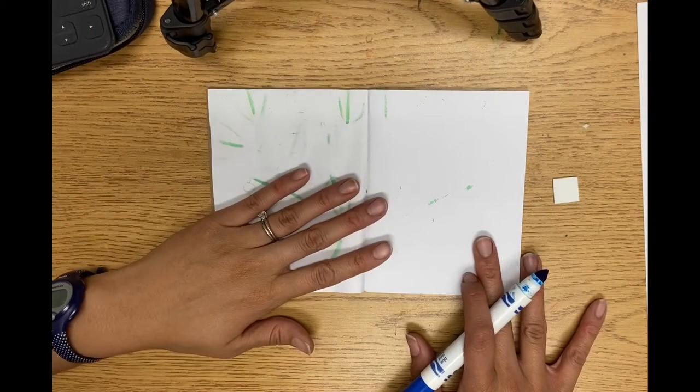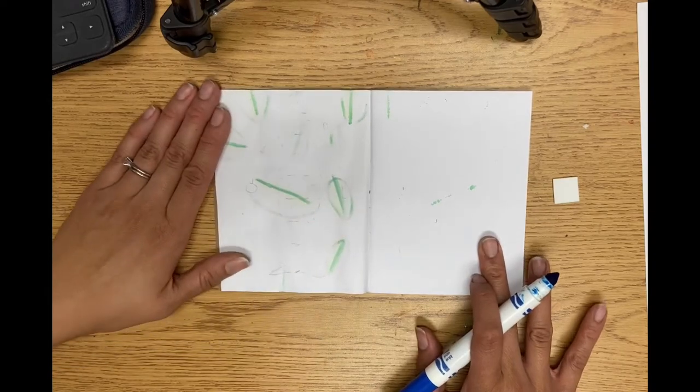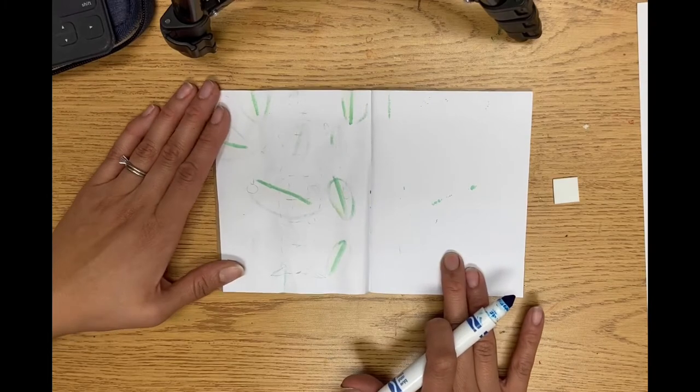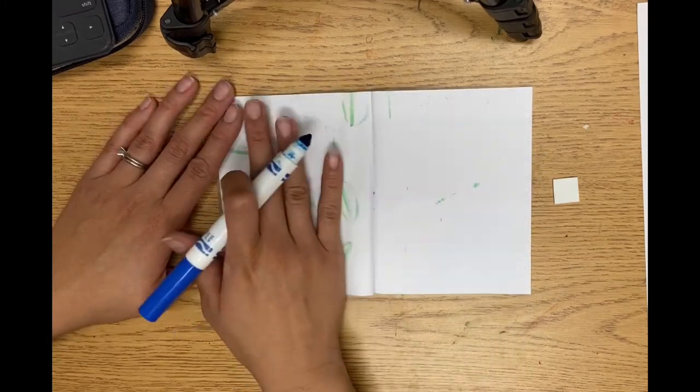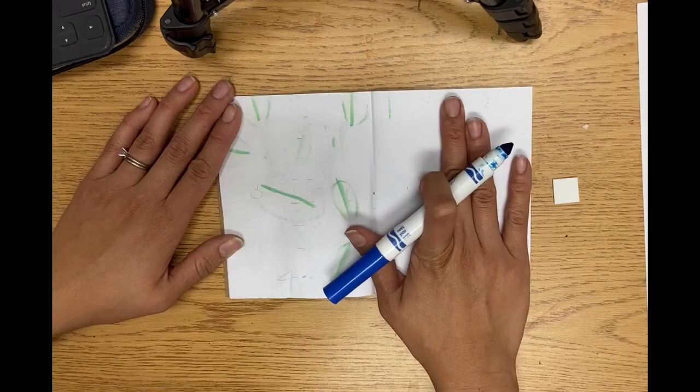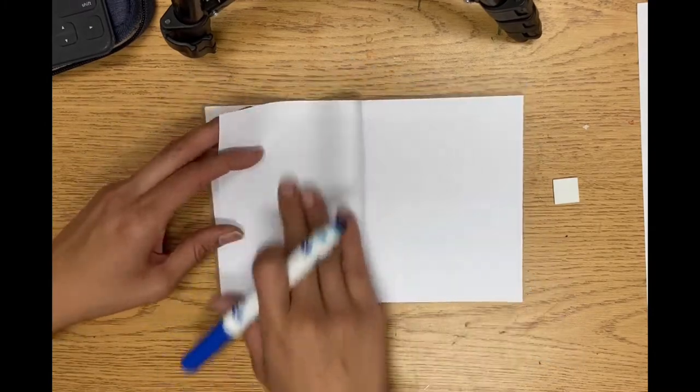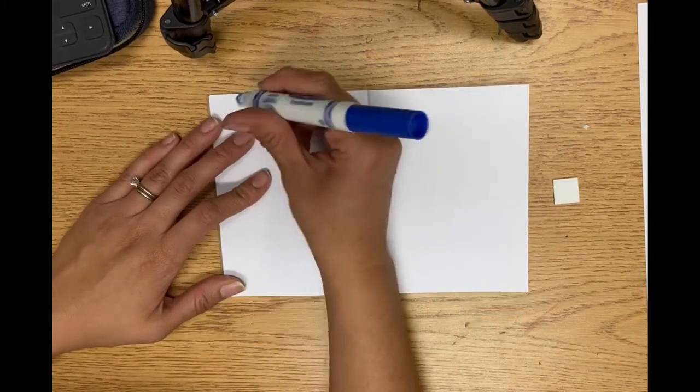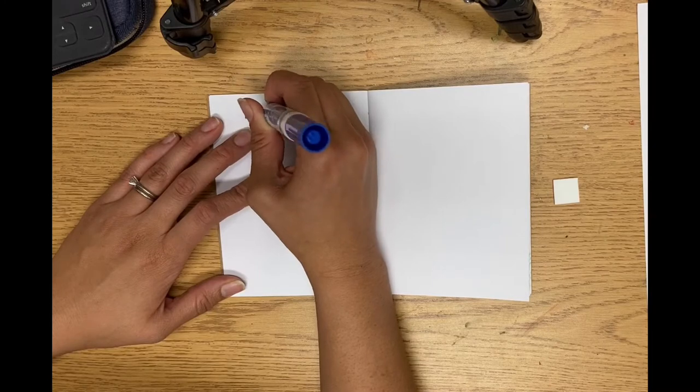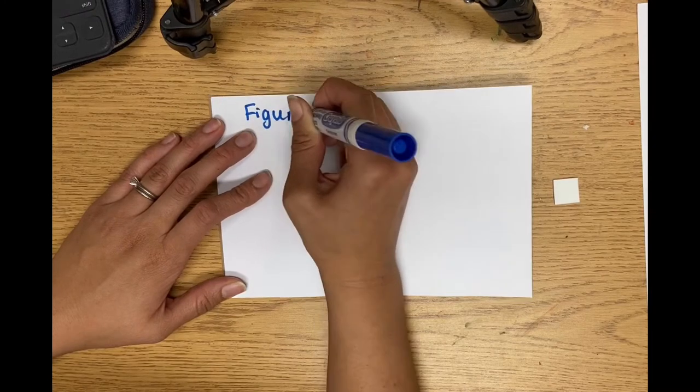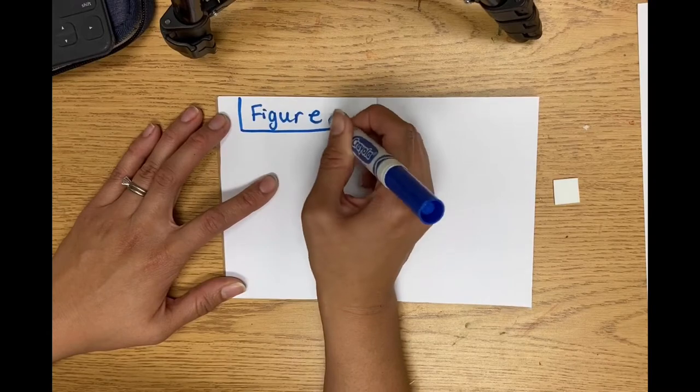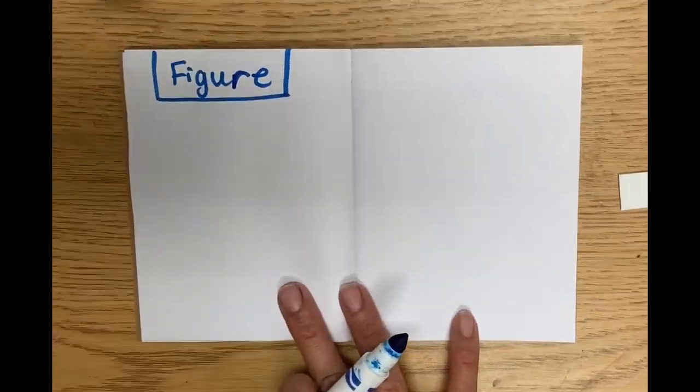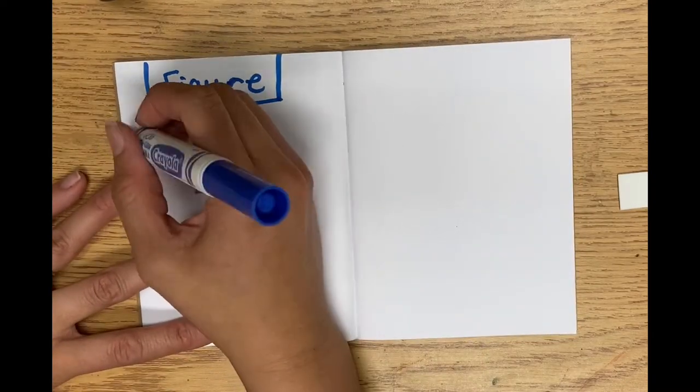All right, so today we're going to talk about the human figure. So you should go to the next blank pages in your sketchbook. So a back and a front. So we can write some notes over here and draw something over here. So if this really bothers you, you can go to the next blank pages. So actually I'm going to do that. At the top I want you to write the word